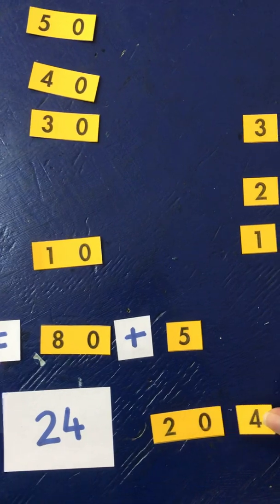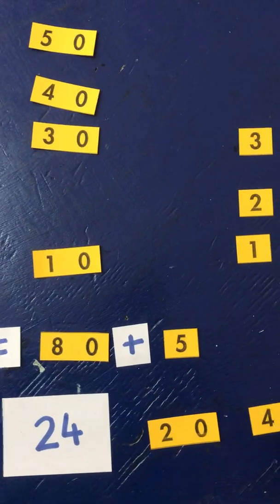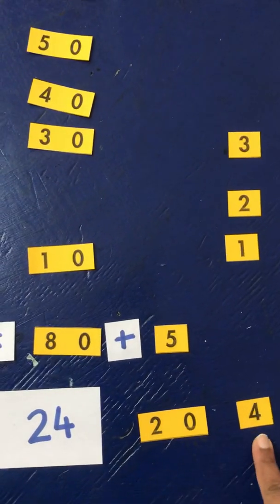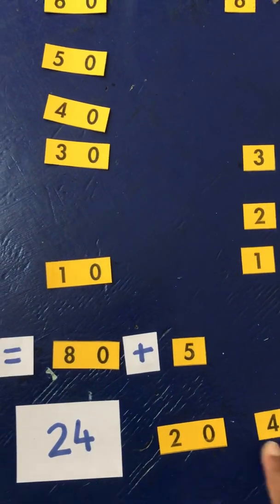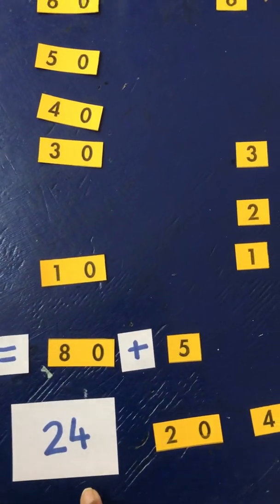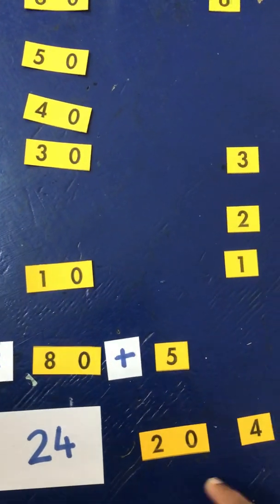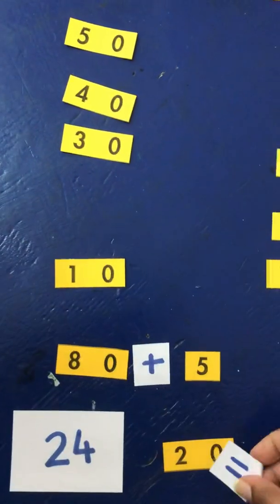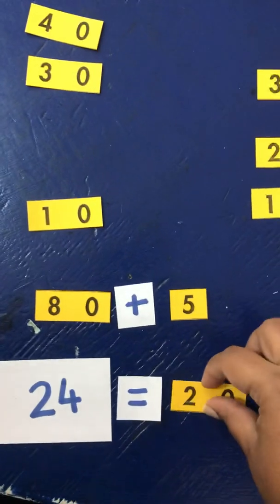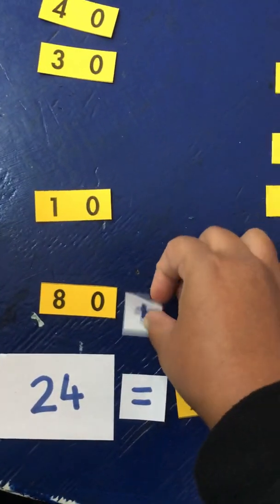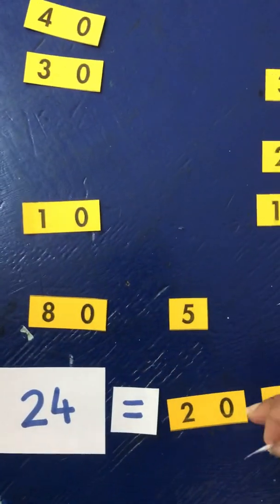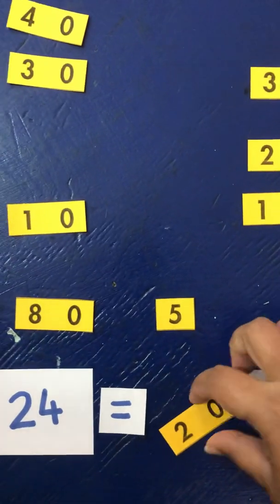And when we break it apart, we get 20 and 4. So we can say 24 is the same as 20 and 4. 24 is equal to 20 plus 4.